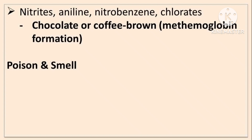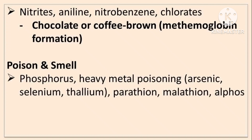Similarly, the smell is particular with particular poison. Here the list is given in postmortem examination. In phosphorus poisoning, heavy metal poisoning like arsenic, selenium, thallium, parathion, malathion, alphose — the smell of the body is garlic-like.